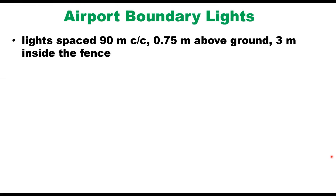Airport boundary lights are spaced 90 meters center to center and are 0.75 meters above the ground. If there is a fence, these lights are placed 3 meters inside the fence. The entire boundary of the airport is lighted by these lights.